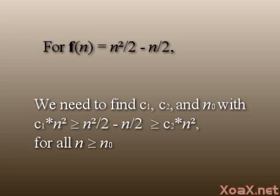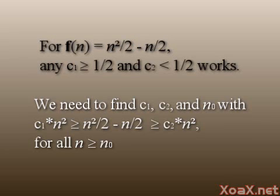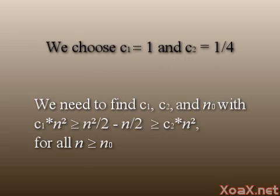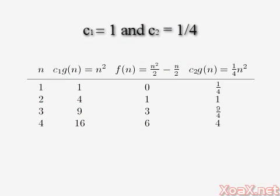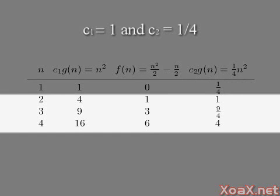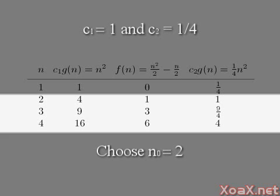Since our coefficient is one-half on the n² term for f(n), any value of c₁ greater than or equal to one-half, and any value of c₂ less than one-half, will work to demonstrate that the bubble sort is big theta of n². For simplicity, we choose c₁ equals 1 and c₂ equals one-fourth. Here's a table of the first few values for each function. Notice that any value of n greater than or equal to 2 appears to satisfy our inequalities, so we choose n₀ equal to 2.